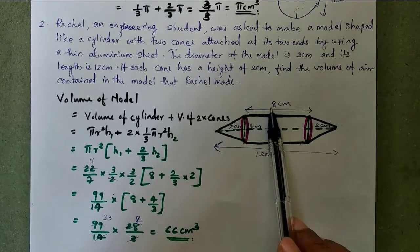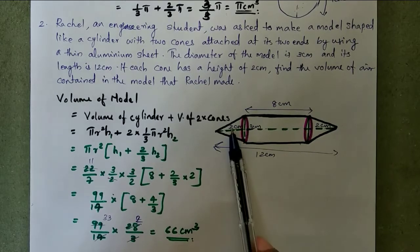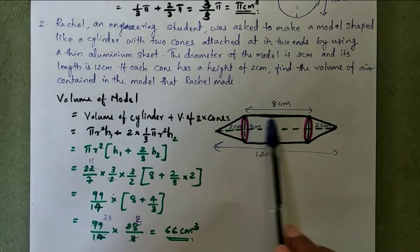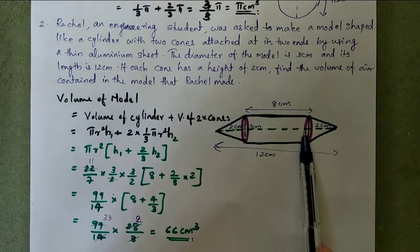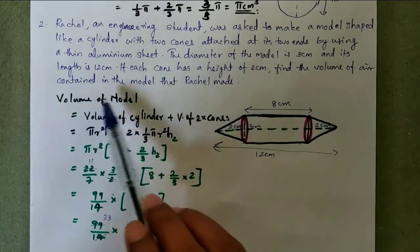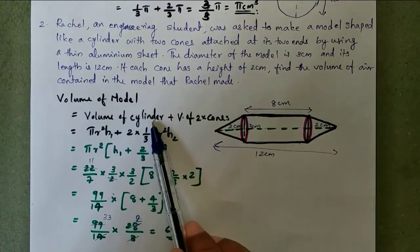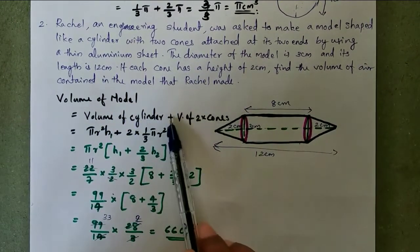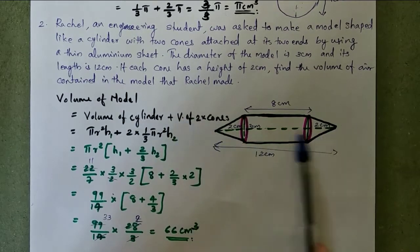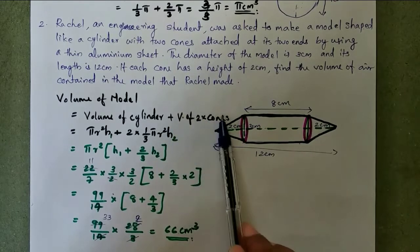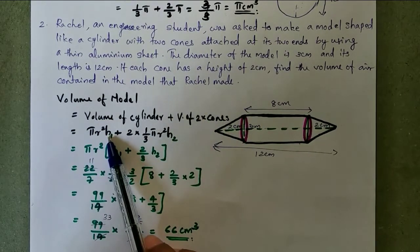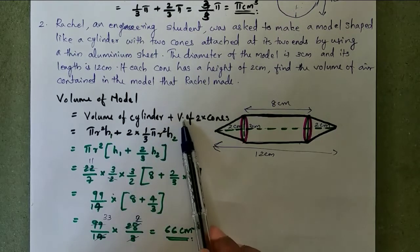12 minus 2 plus 2, 4 from 12, that is 12 minus 4 is equal to 8 centimeter, is the height of the cylinder. So we have to find the volume of this solid. Volume of model is equal to volume of cylinder plus volume of two cones.